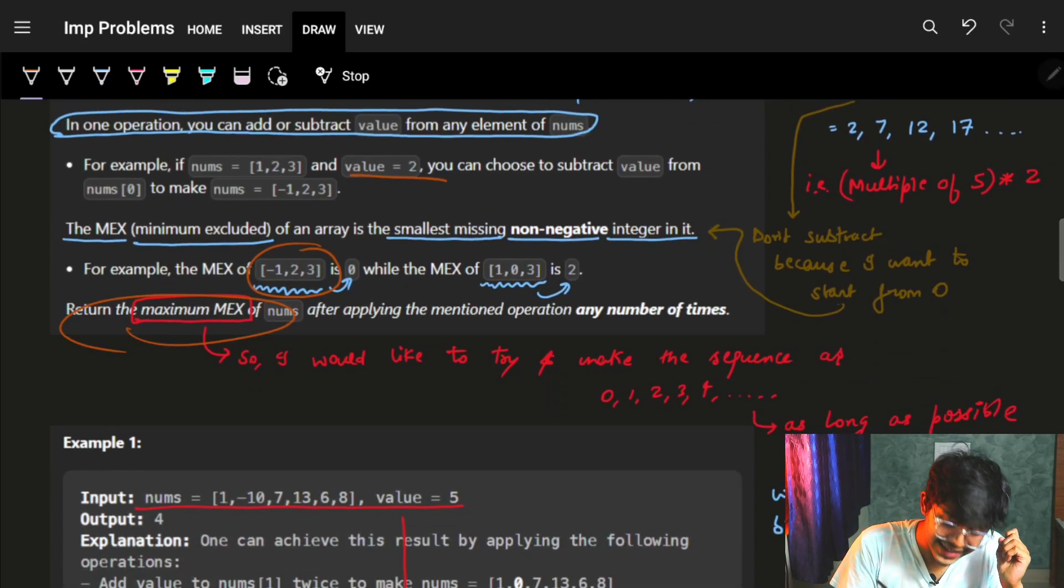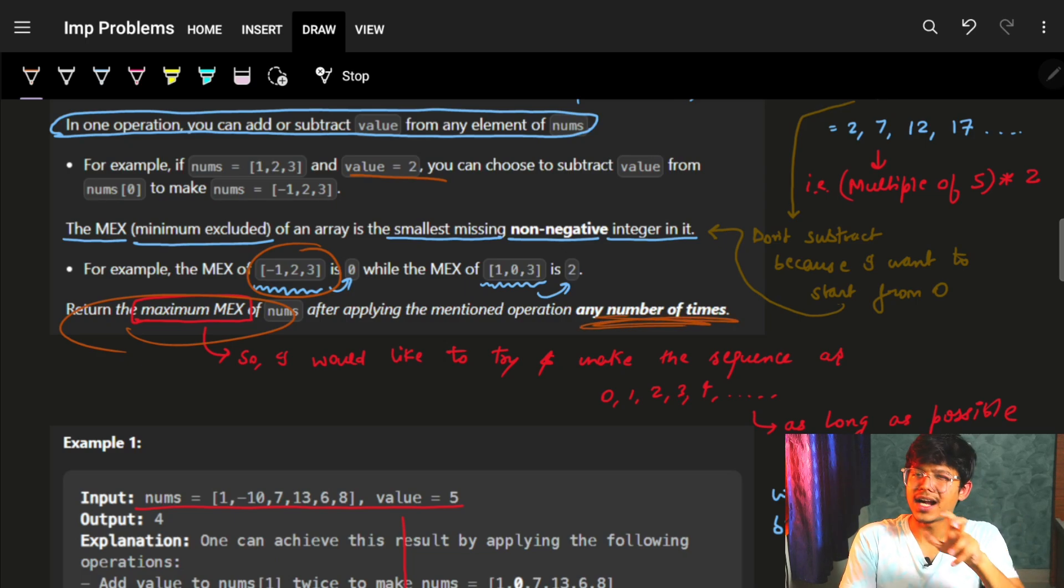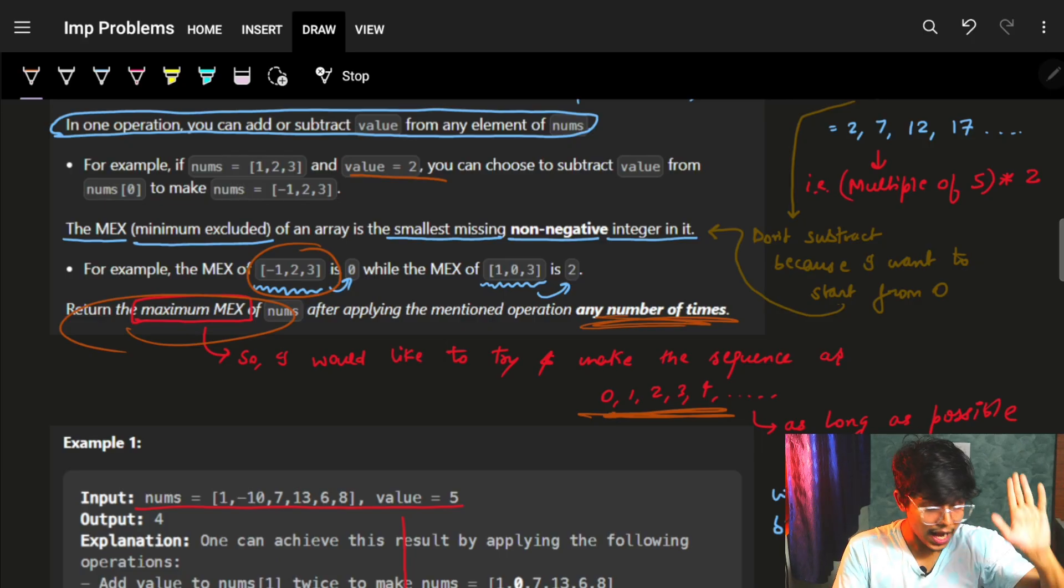So basically, I have to find the maximum MEX and the operation I can do is, I can just add or subtract that value any times. So it means that I have to make the sequence something like 0, 1, 2, 3, try to make it at max as possible.